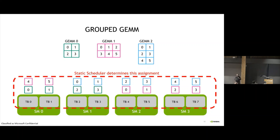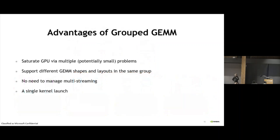We have a static scheduler that, given a particular decomposition of all the GeMMs, assigns tiles in a particular way to reduce idleness. The advantages are: you can saturate the GPUs, support different shapes — that is, different element sizes, M and K — you don't have to do multi-streaming, and you can do a single kernel launch instead of separate kernel launches.